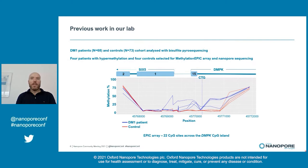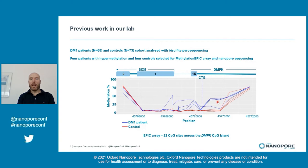The EPIC array has around 850,000 data points at CpG sites throughout the genome, and 22 of these are found in the DMPK CpG island. The dotted line in the figure represents the CpG repeat, and quite clearly we see hypermethylation surrounding the repeat in the patients, while the samples are generally highly methylated further away from the repeat.